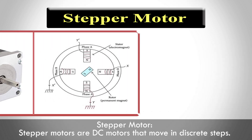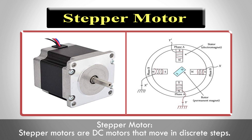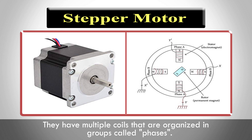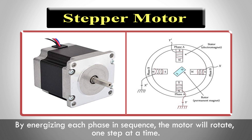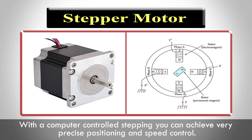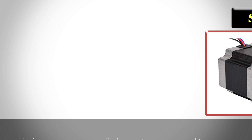Stepper motors are DC motors that move in discrete steps. They have multiple coils that are organized in groups called phases. By energizing each phase in sequence, the motor will rotate one step at a time. With computer-controlled stepping, you can achieve very precise positioning and speed control.